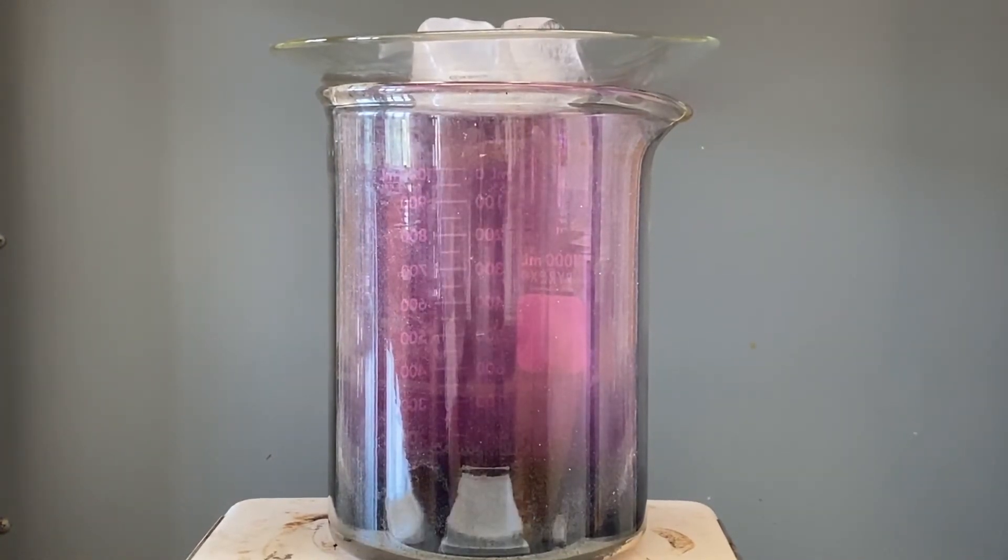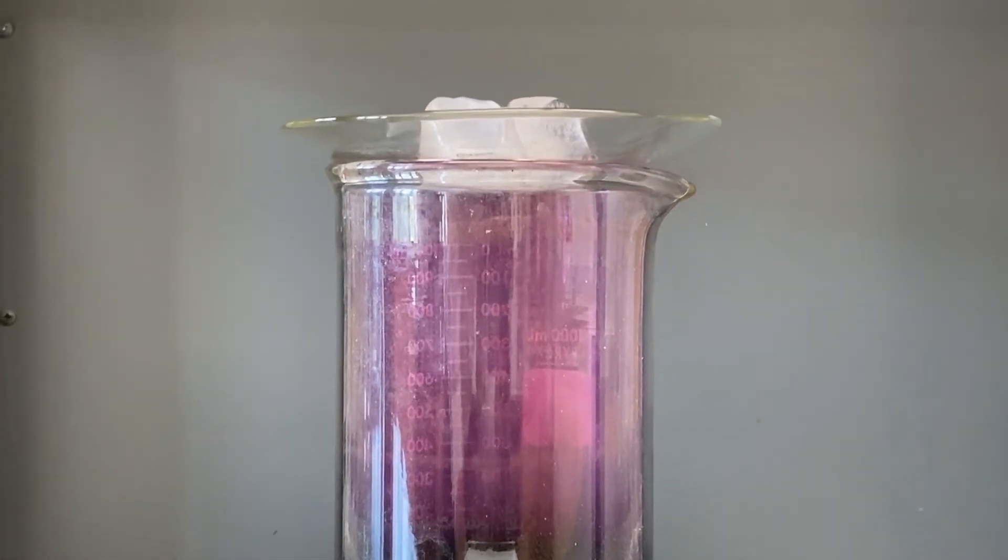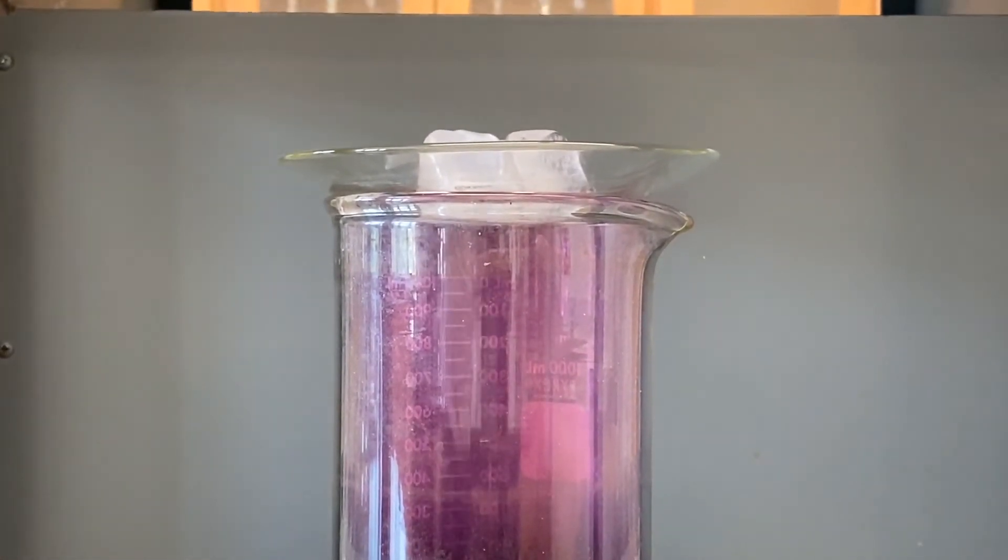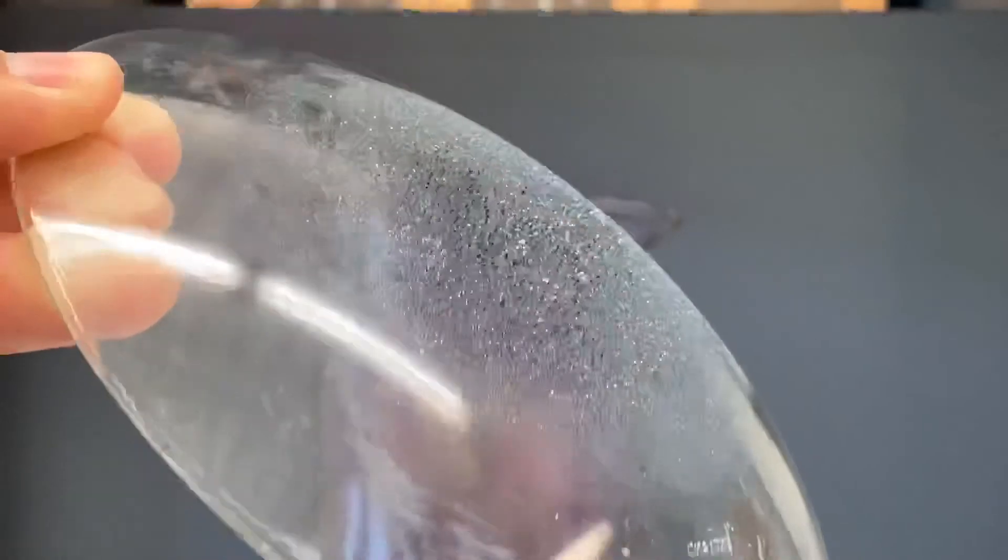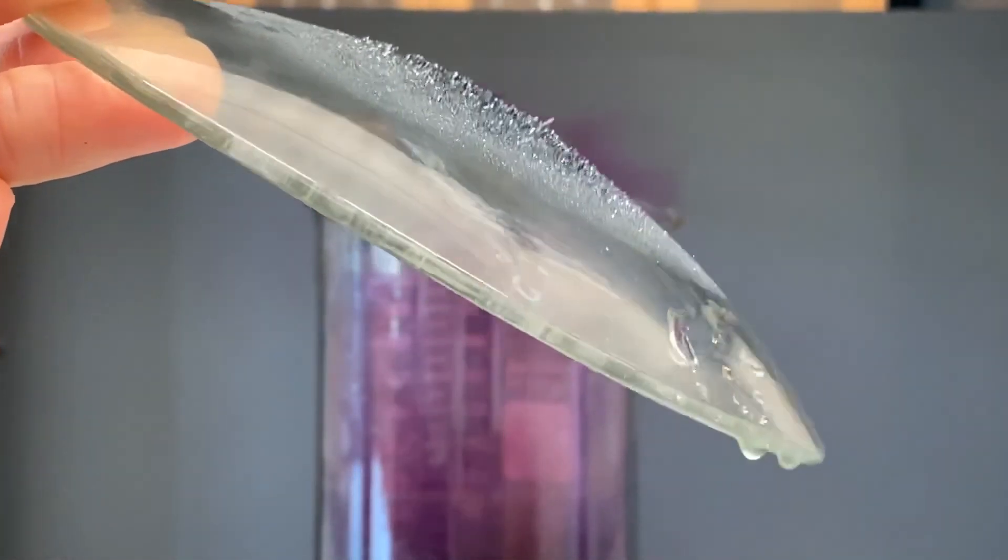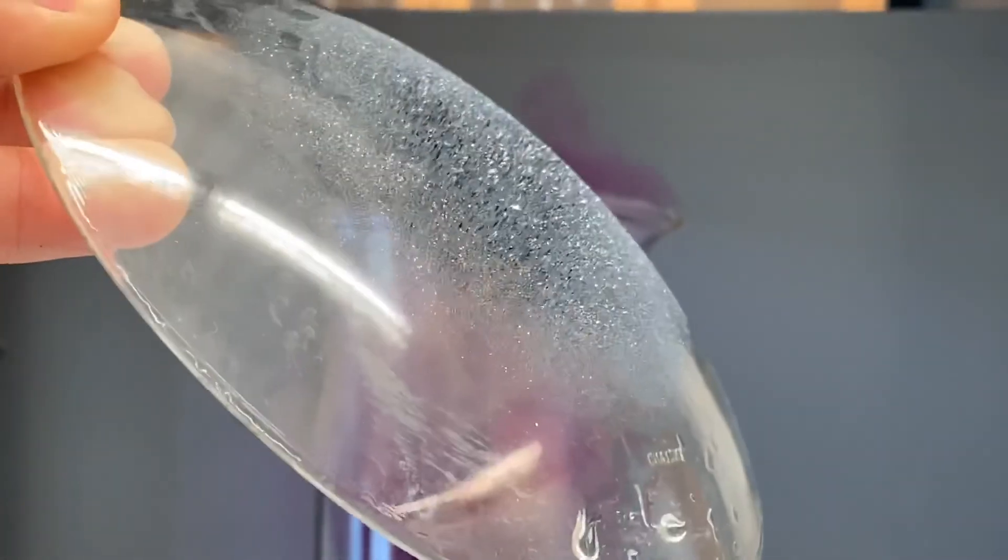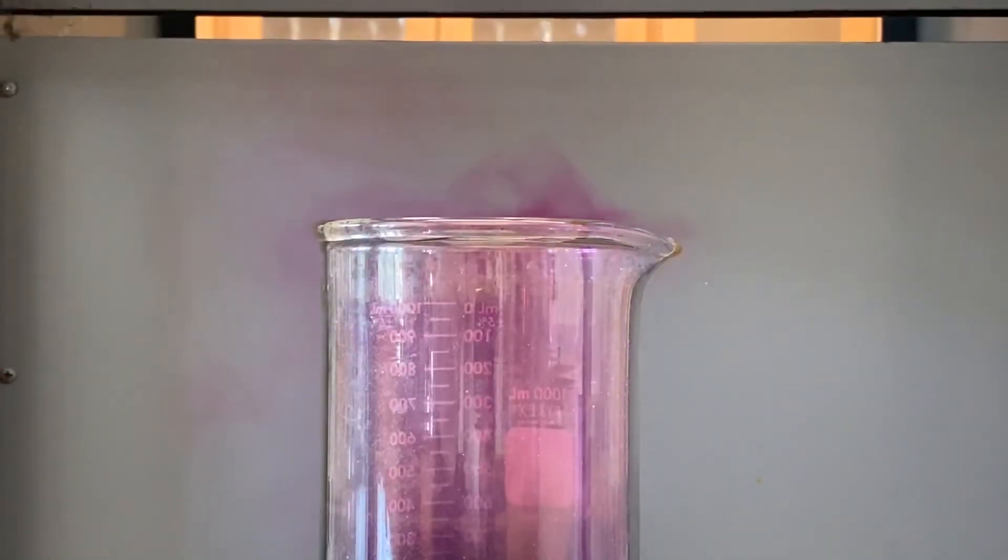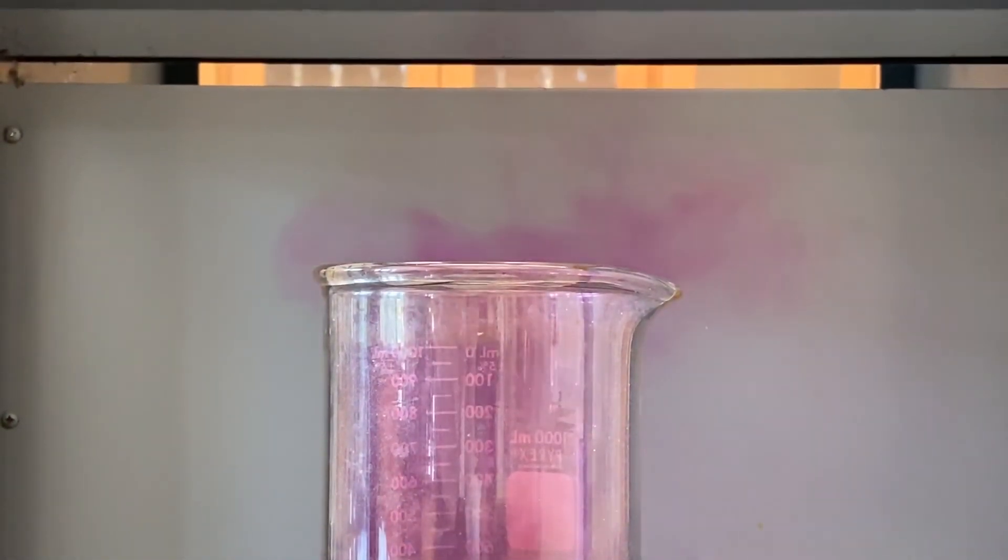Okay, I'm going to take the watch glass off now and I want to show you what it looks like. So there's material that's deposited onto the surface of the watch glass on the bottom where the ice was making it cold. And we can see that the element is fuming.